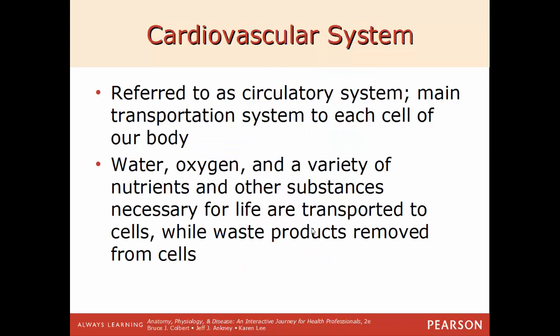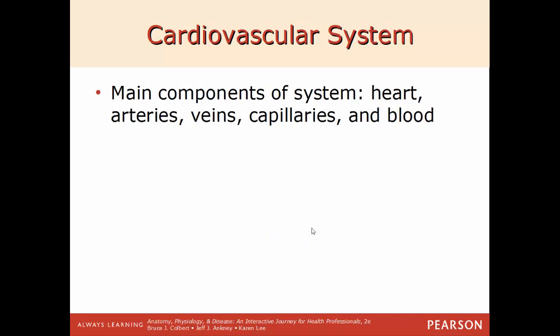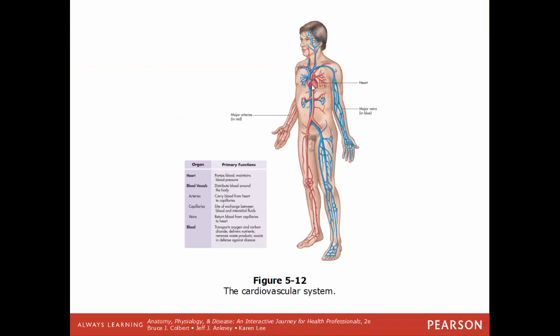The cardiovascular system, also known as the circulatory system, is the main transport system of the body. It delivers things to your cells and takes wastes and materials away. Water, oxygen, sugars, and other nutrients get delivered to cells; once used, waste must be removed. Main components are the heart, arteries, veins, capillaries, and blood. Vessels in red carry blood with oxygen — usually arteries; vessels in blue carry blood without oxygen — usually veins, with one big exception we'll discuss later.